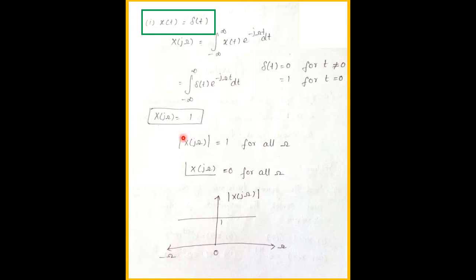Now we take the magnitude and phase. Since there is no imaginary part, |X(jω)| = 1 and ∠X(jω) = 0 — there is no phase spectrum. Drawing the amplitude spectrum along the ω axis from −ω to +ω, the answer is a constant value of 1.